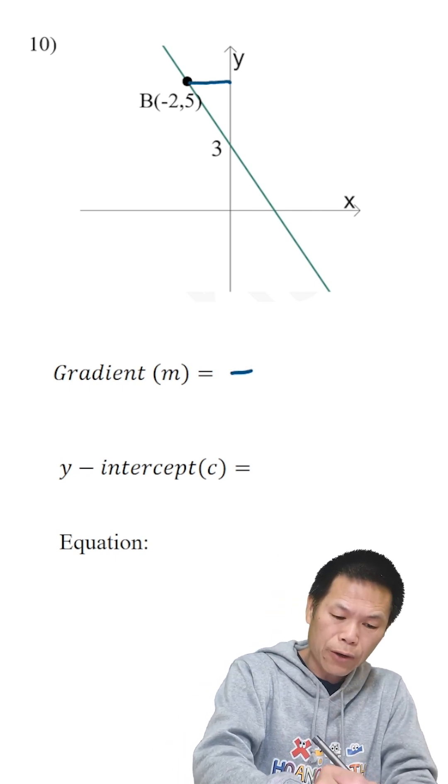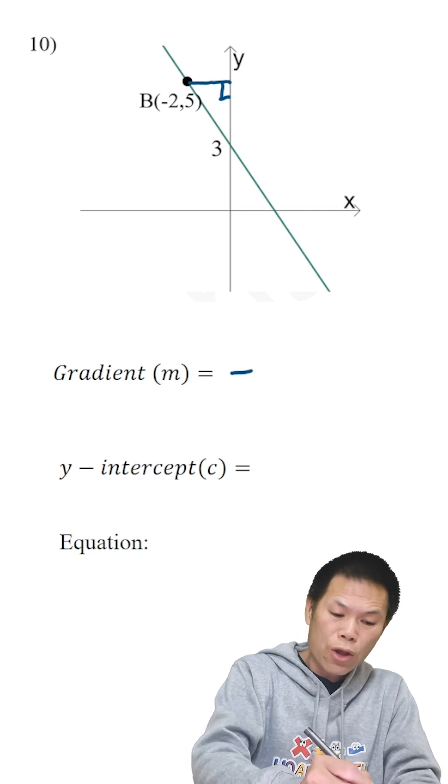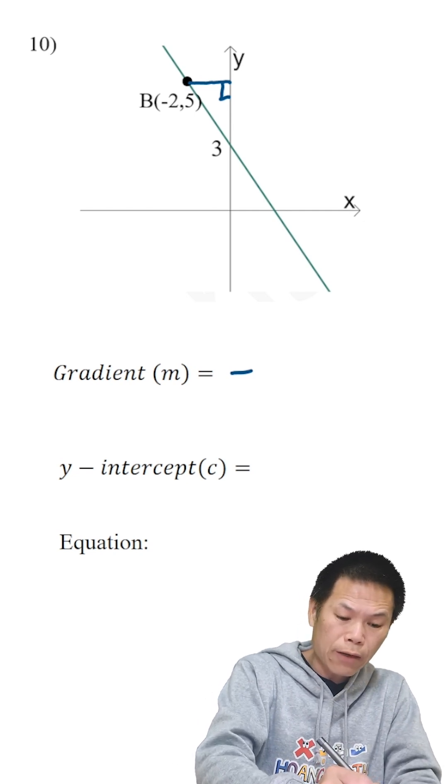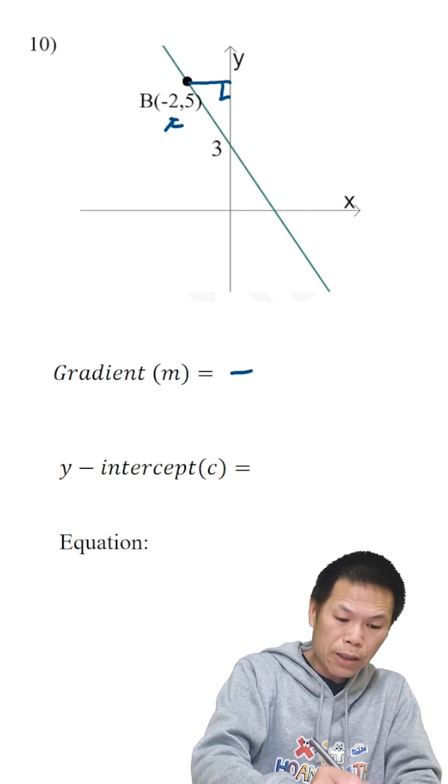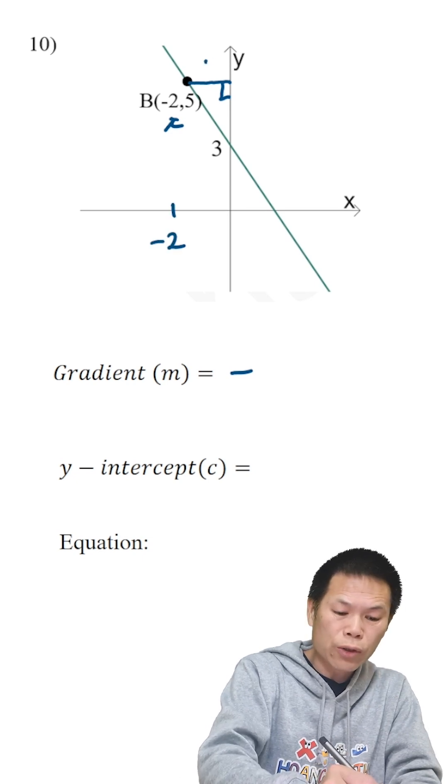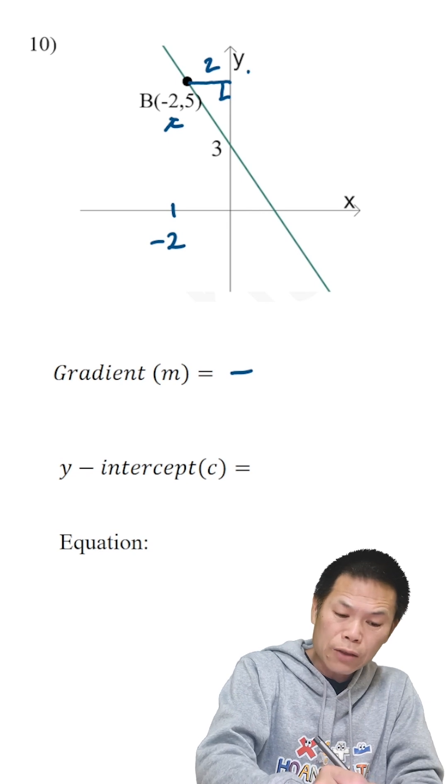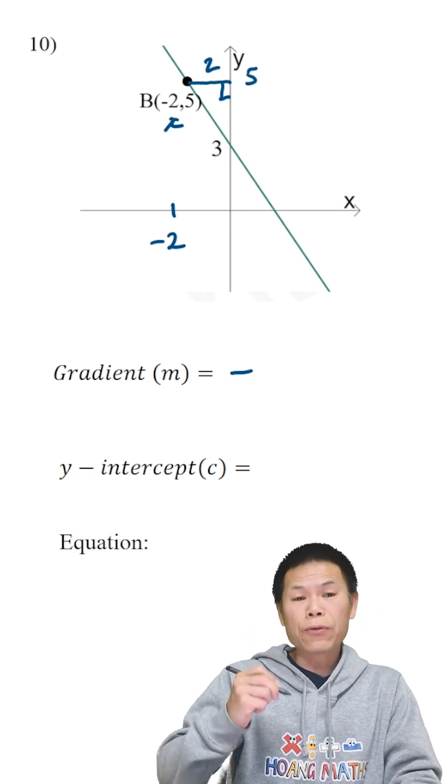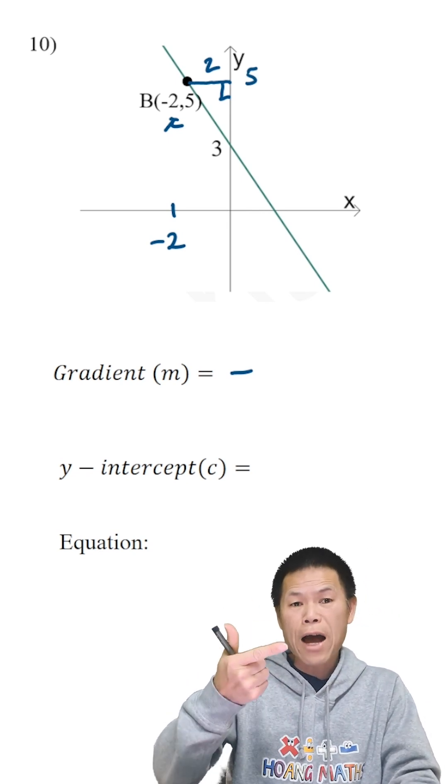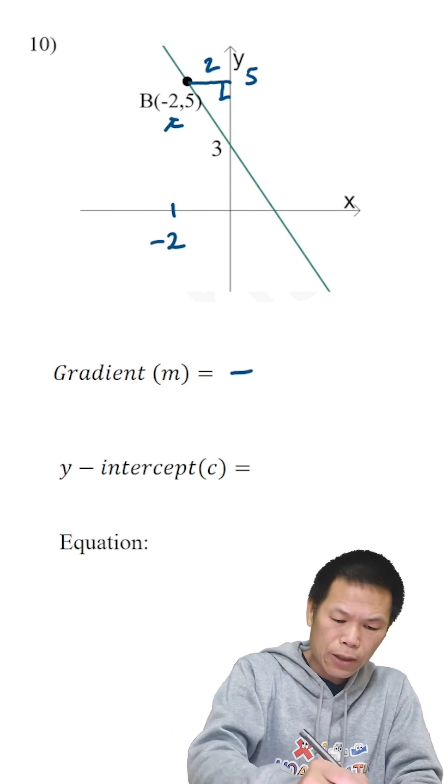Therefore we know that x is negative 2, so that means from 0 to negative 2, that is 2 units. Okay, keep that in mind. And the y value is 5 here, so from 3 to 5, that's also 2.